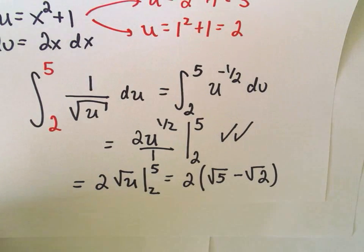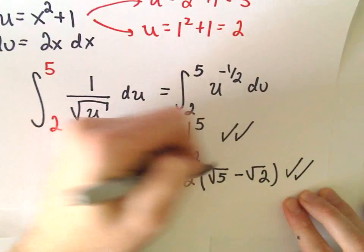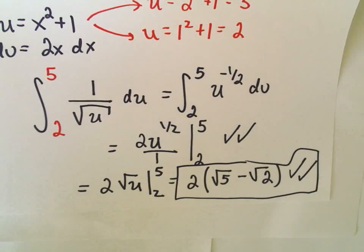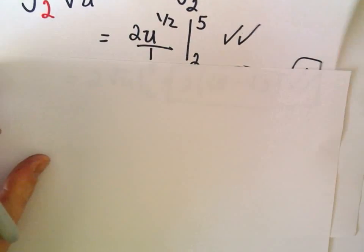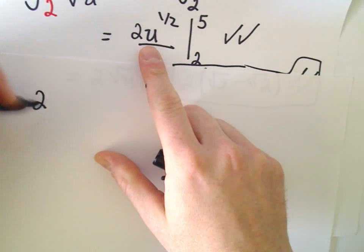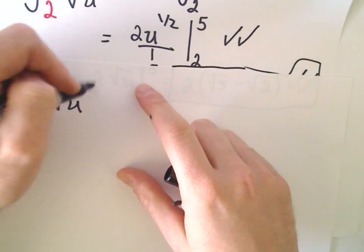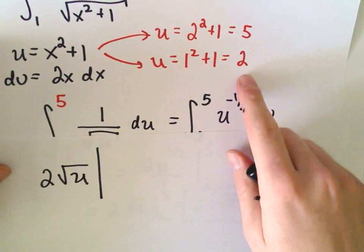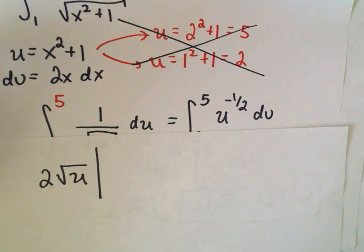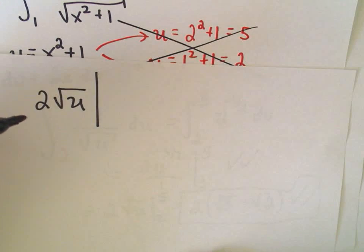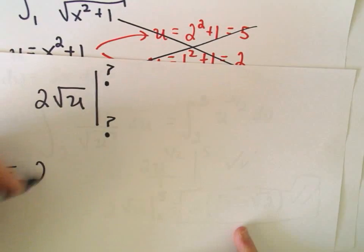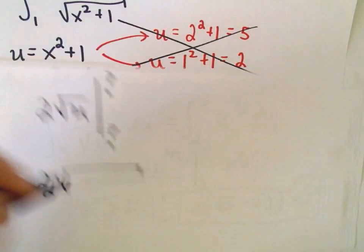Another way that you could do this that would be perfectly valid, so that is the correct answer. Another perfectly valid thing to do is, suppose we got down to this point. We said it's 2 times the square root of u. Suppose we were lazy and we didn't figure out these new limits of integration. Suppose we didn't figure out the 5 and 2 by doing this step. Don't even do that. So in a sense, I don't know what these numbers are. Well, what you can do is you can resubstitute in.